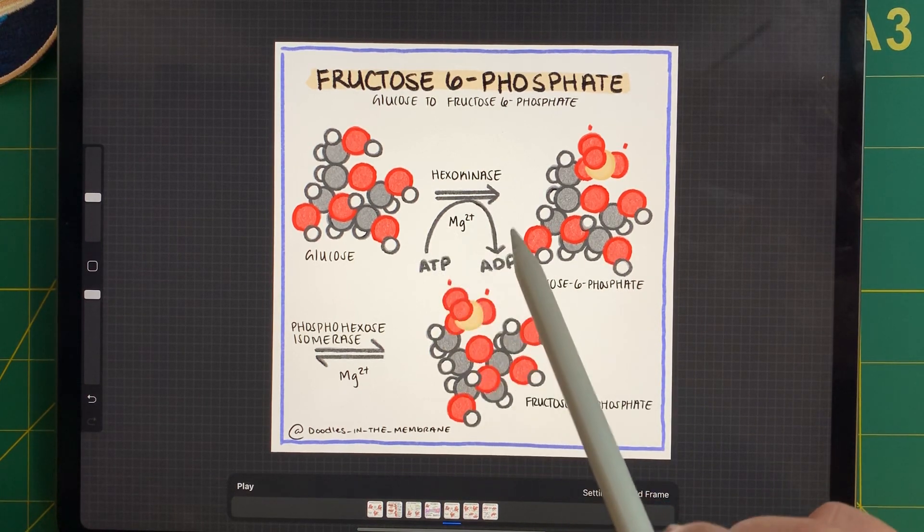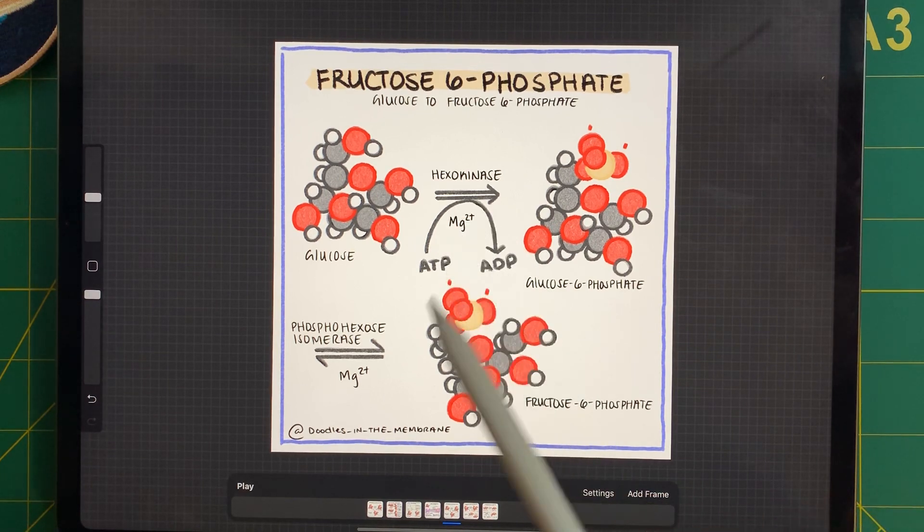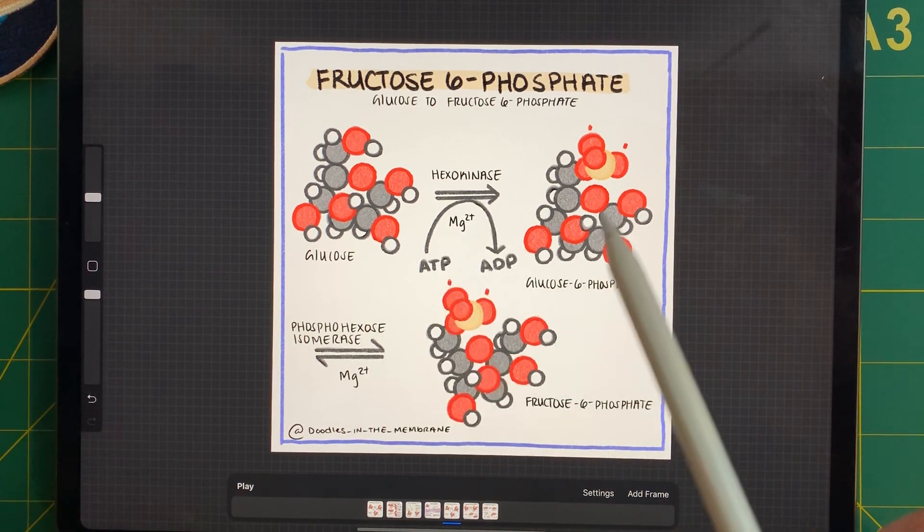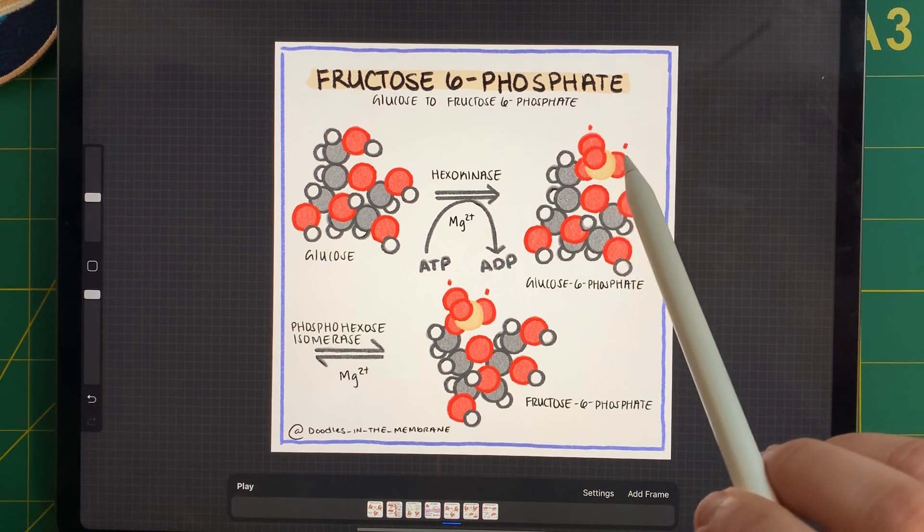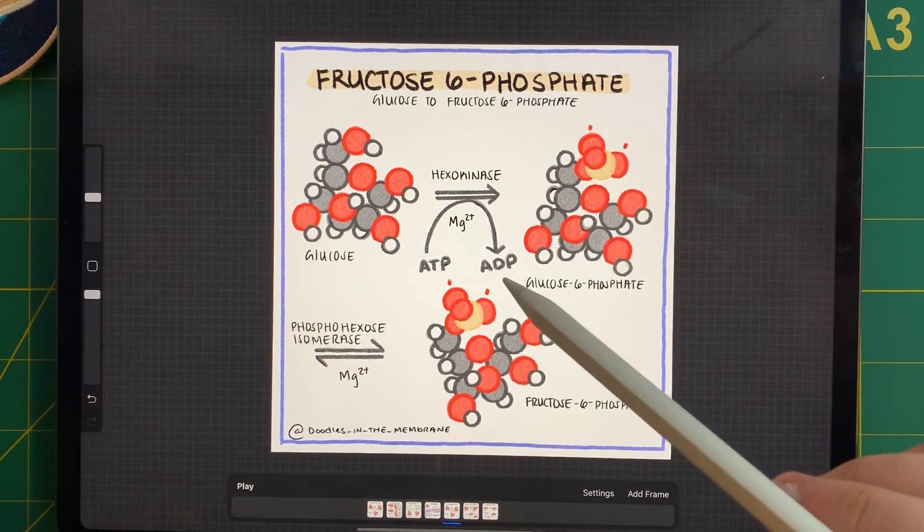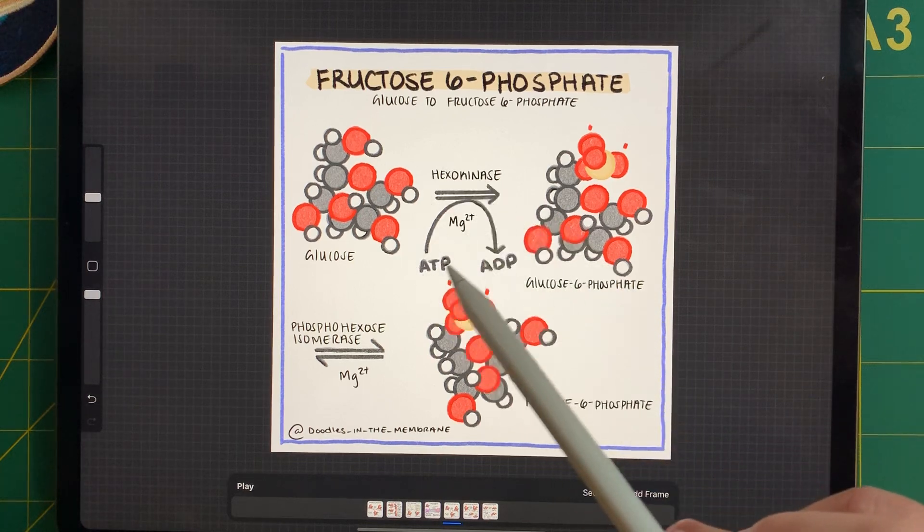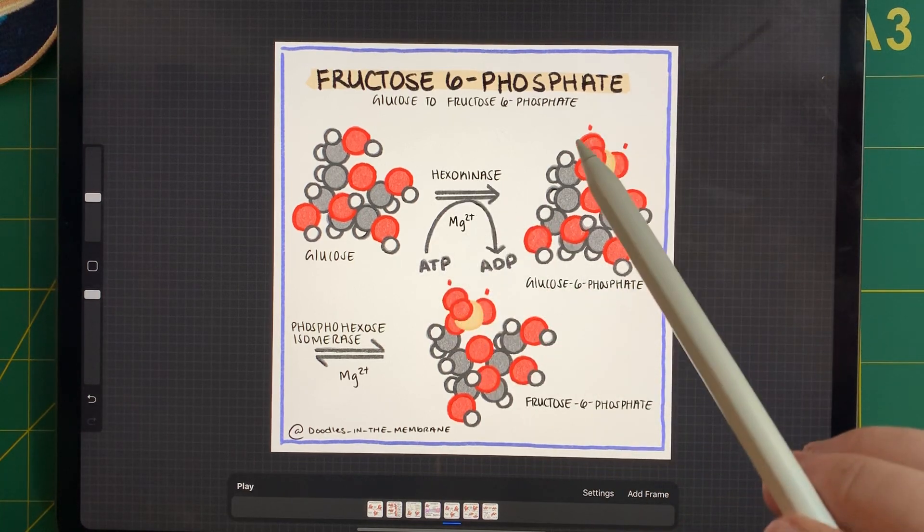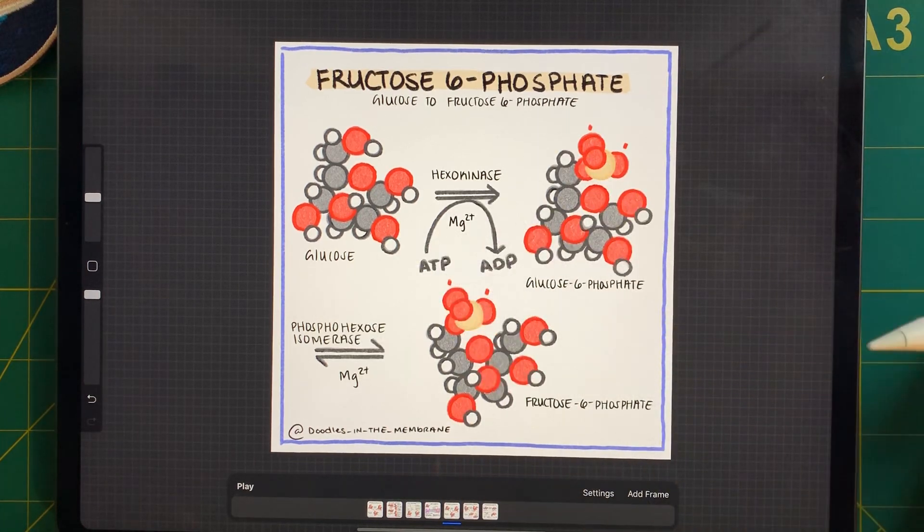Now, as we can see here, we also are working with magnesium. Now, the reason why we're working with magnesium is because the phosphoro group on ATP and on glucose have negative charges. Using magnesium helps satisfy some of those charges and helps the reaction go smoothly.